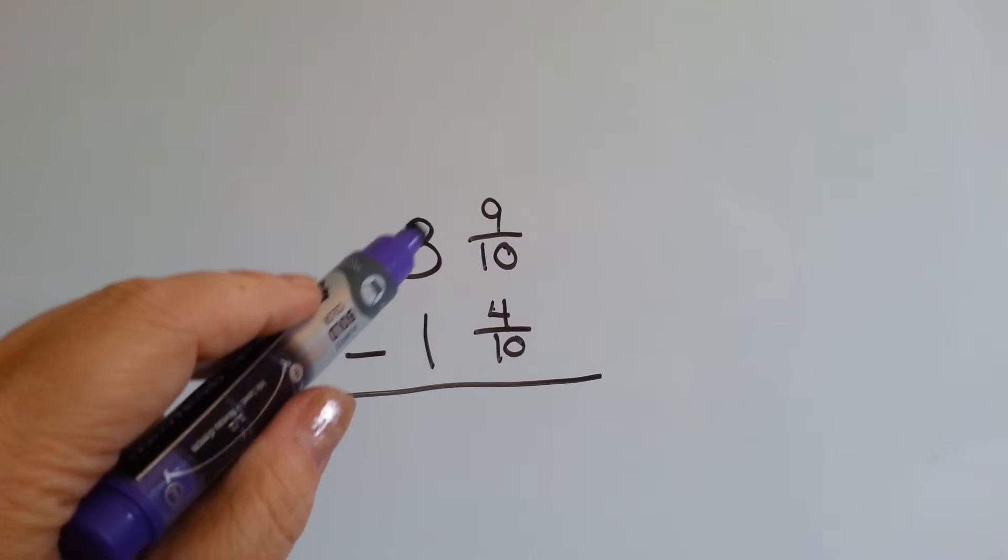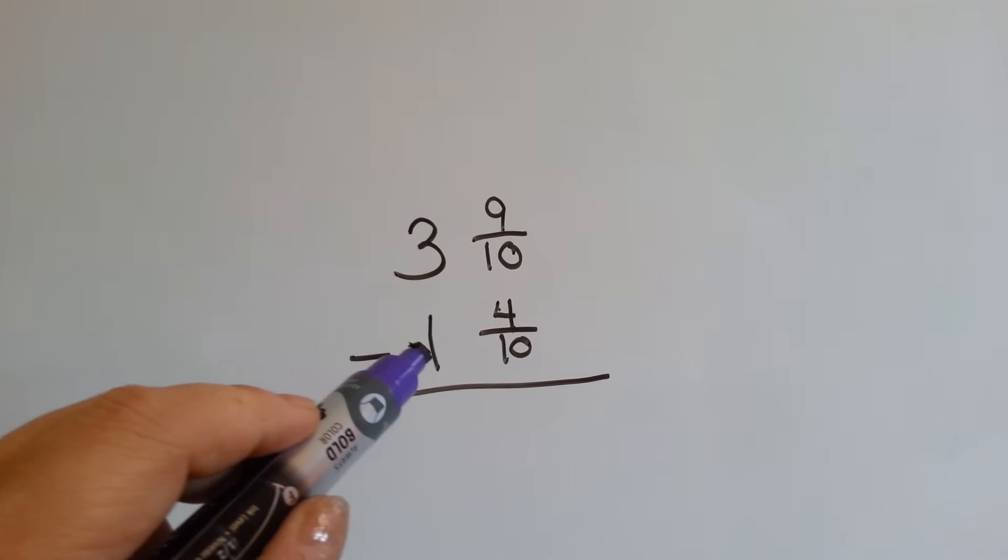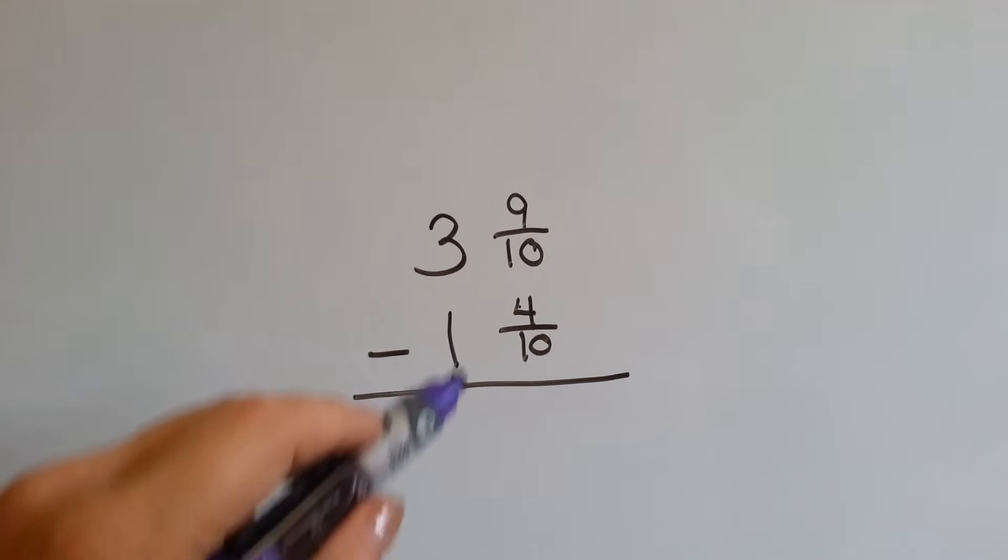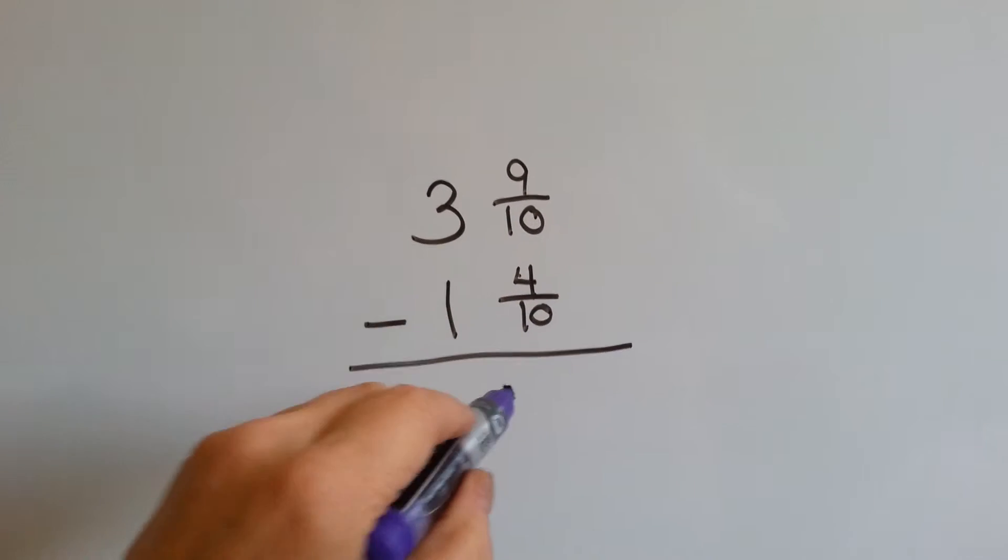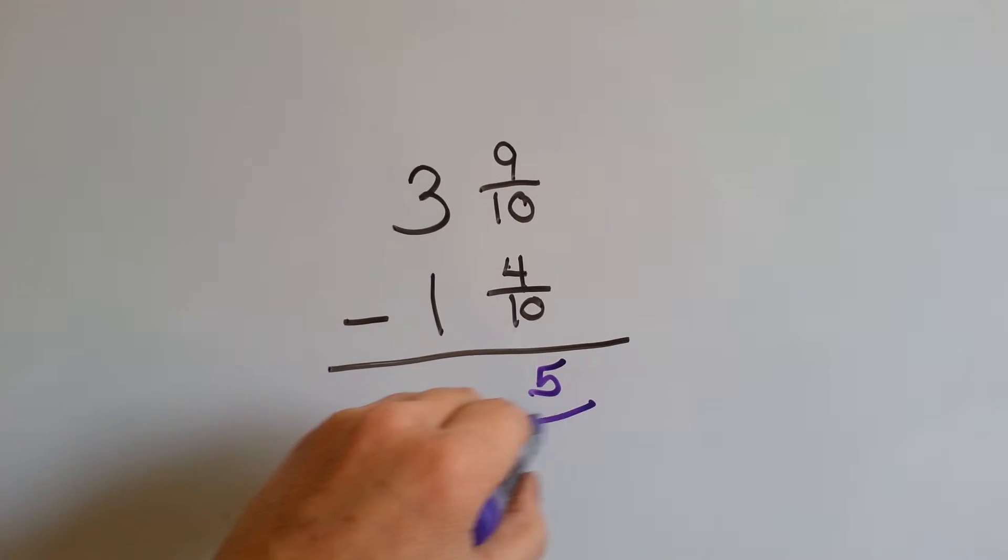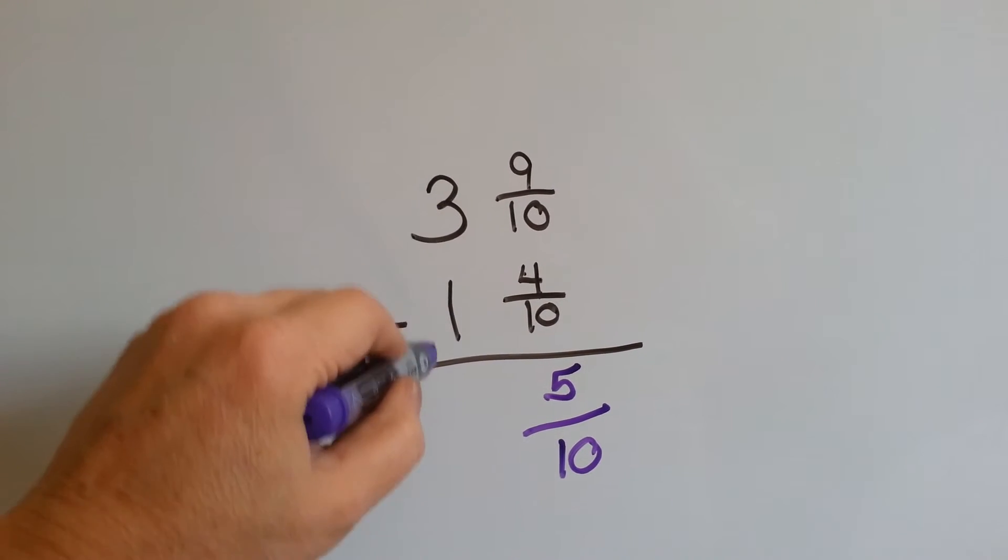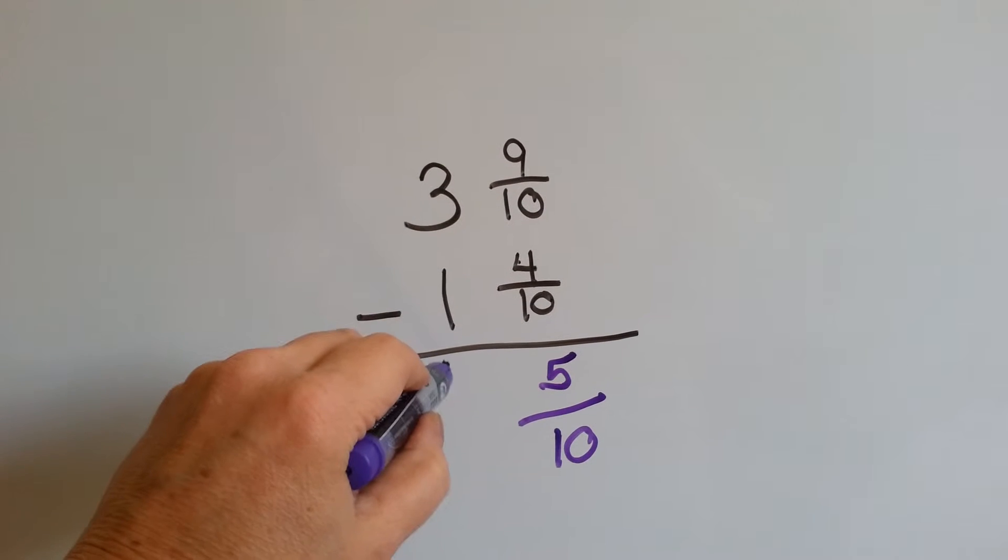Now we've got 3 and 9 tenths minus 1 and 4 tenths. 9 minus 4 is 5. We know 10 is our denominator, and then we subtract our whole numbers. 3 minus 1 is 2.